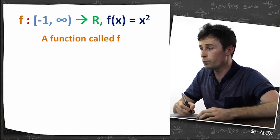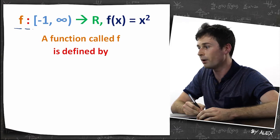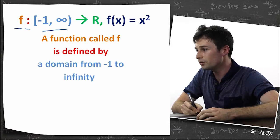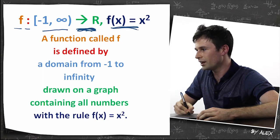How to read a function. The way you'd read this is: a function called f is defined by a domain from negative one to infinity, drawn on a graph containing all numbers, with the rule f(x) = x².